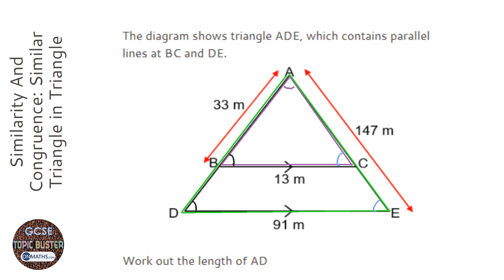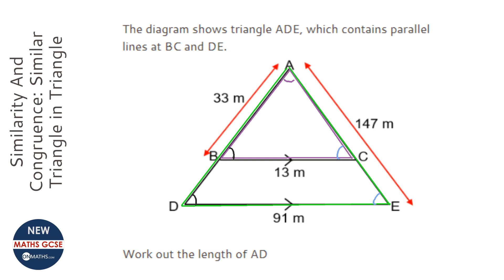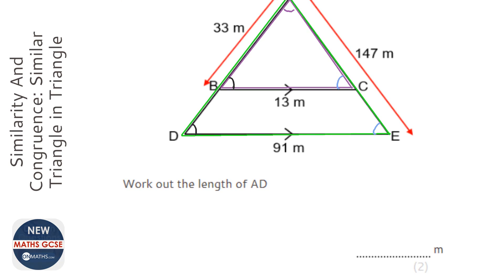The fact that they're similar means that we can work out a scale factor and work out missing lengths. Now the way we do this question, the simplest way of doing it, is just to draw out the two triangles. So we've got the smaller one, and just do a rough sketch of it, and the bigger one.